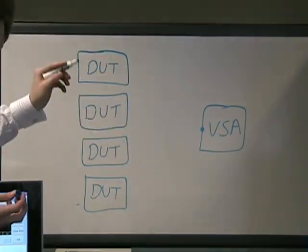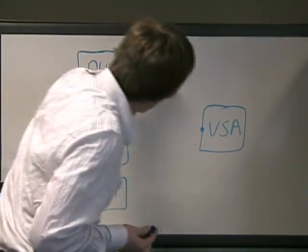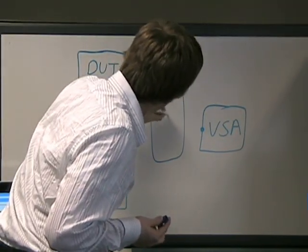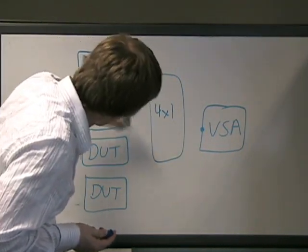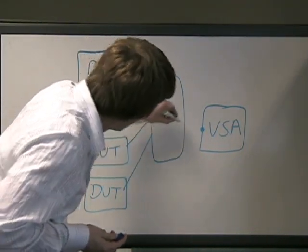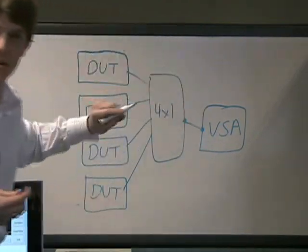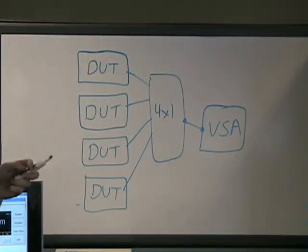So what I can do in this scenario is use switching or a multiplexer to connect each of these dots to my vector signal analyzer. You can see I can connect the different channels of the MUX and it'll simply measure the output at the COM port of the switch.